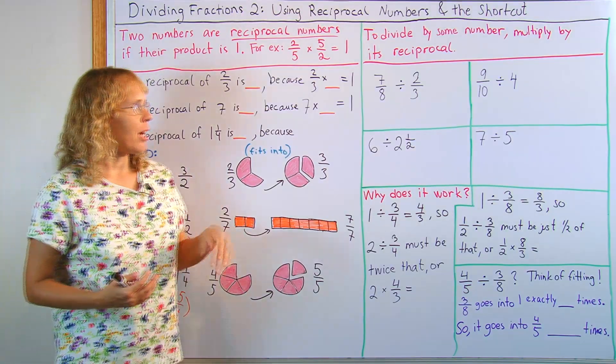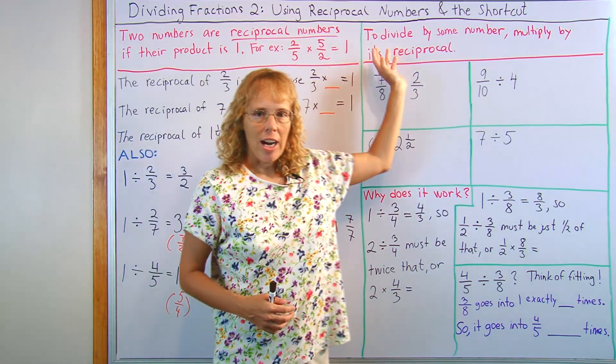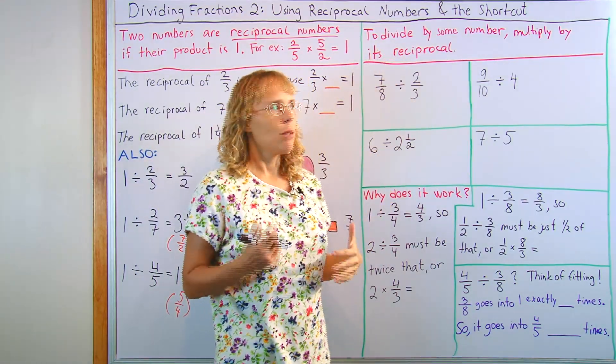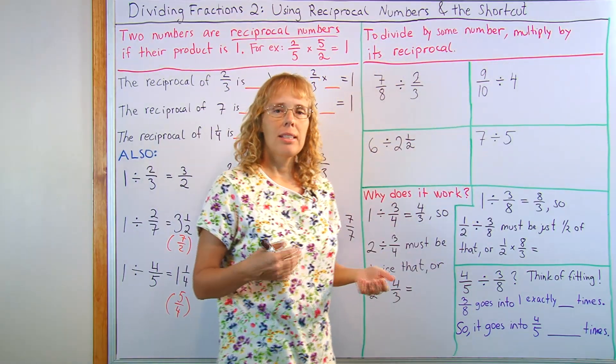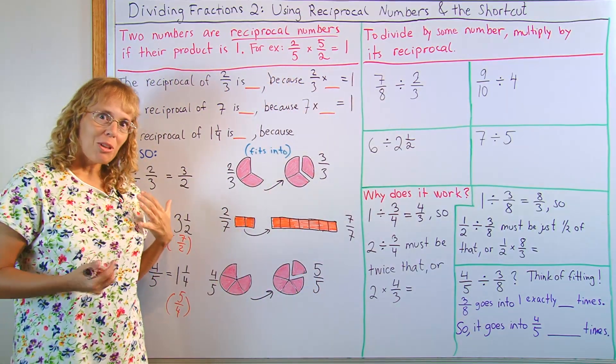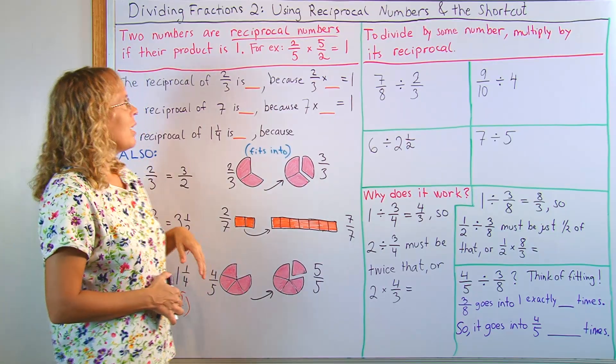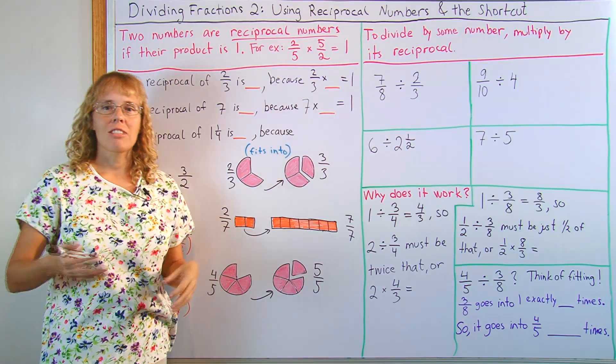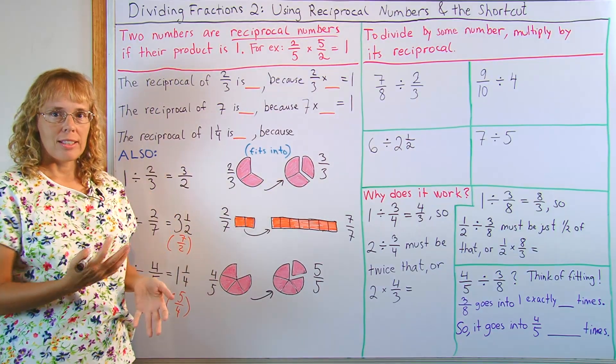And for that rule, I wrote it here. To divide by any number, fraction or otherwise, you can multiply by its reciprocal number. So for the rule, we need to first study what is a reciprocal number. Two numbers are reciprocal numbers if their product is one.